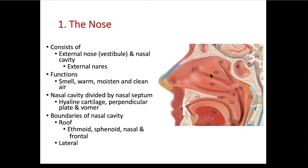The lateral wall of each compartment will consist of the nasal conchae — these are ridges covered by mucosa. The inferior nasal concha (concha is singular, conchae is plural) are paired bones, so you actually have two of them. This is a separate bone. The middle and superior nasal conchae are part of the ethmoid bone.